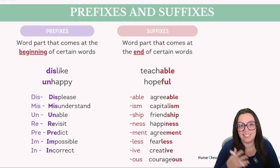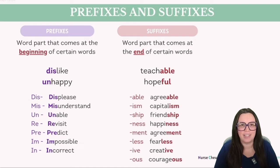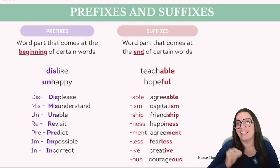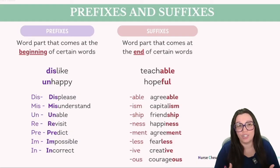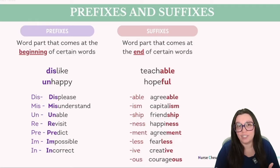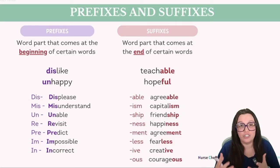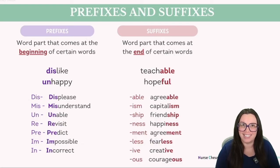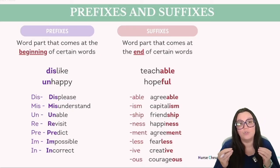Let's talk about prefixes and suffixes. Simply put, a prefix is a segment of a word placed at the start of the word, and a suffix is added at the end. It's crucial to note that not every word will have a prefix or suffix. Take for instance the word dog, which does not feature either. Similarly, chair and run lack these additions despite being frequently used words. This highlights that prefixes and suffixes are applicable to certain words rather than universally across the language.